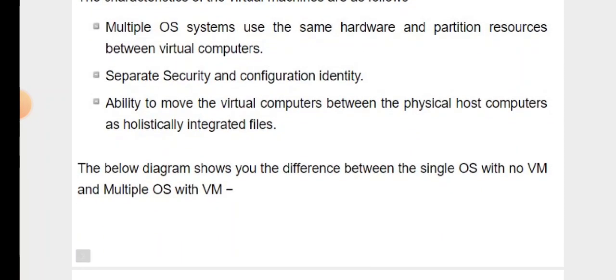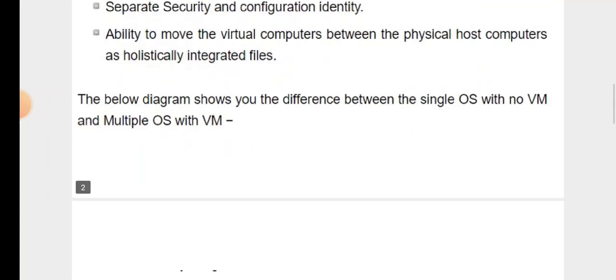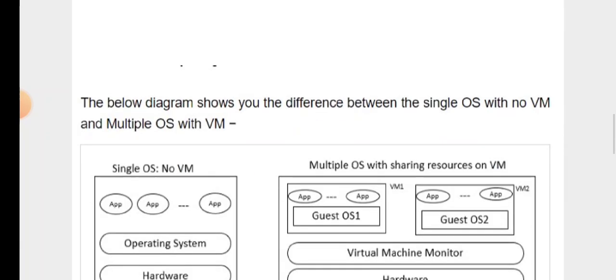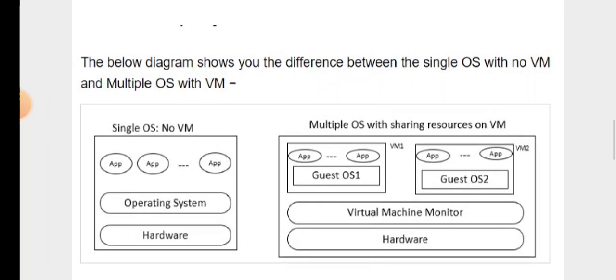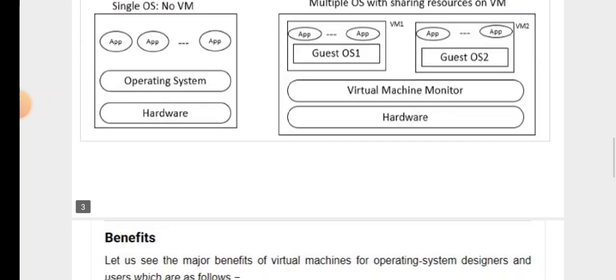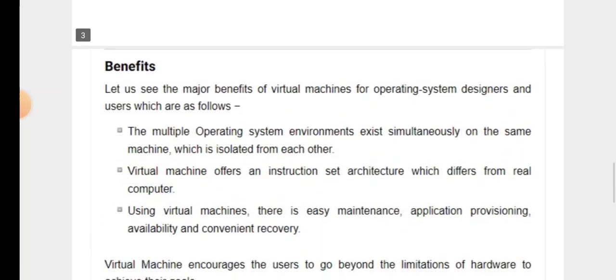The below diagram shows the difference between a single operating system with no virtual machine and multiple operating systems with virtual machines, as you can see in the given diagram.